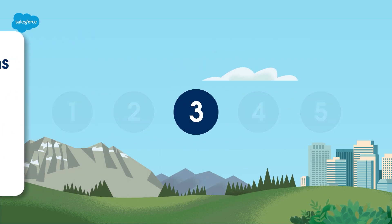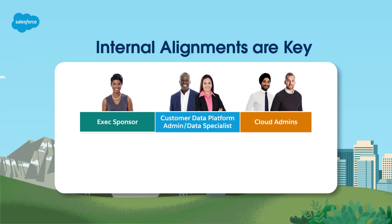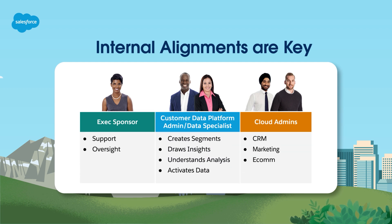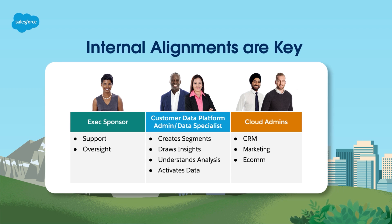Tip number three: get internal alignment with product owners and decision makers. Clearly defining who's in charge of what can help you avoid false starts and have a successful, smooth kickoff of your implementation project. Make sure everyone is clear on priorities and objectives. If your data is spread across many business units and systems of record, include a product leader from each of those areas in all planning meetings so that data gets included.